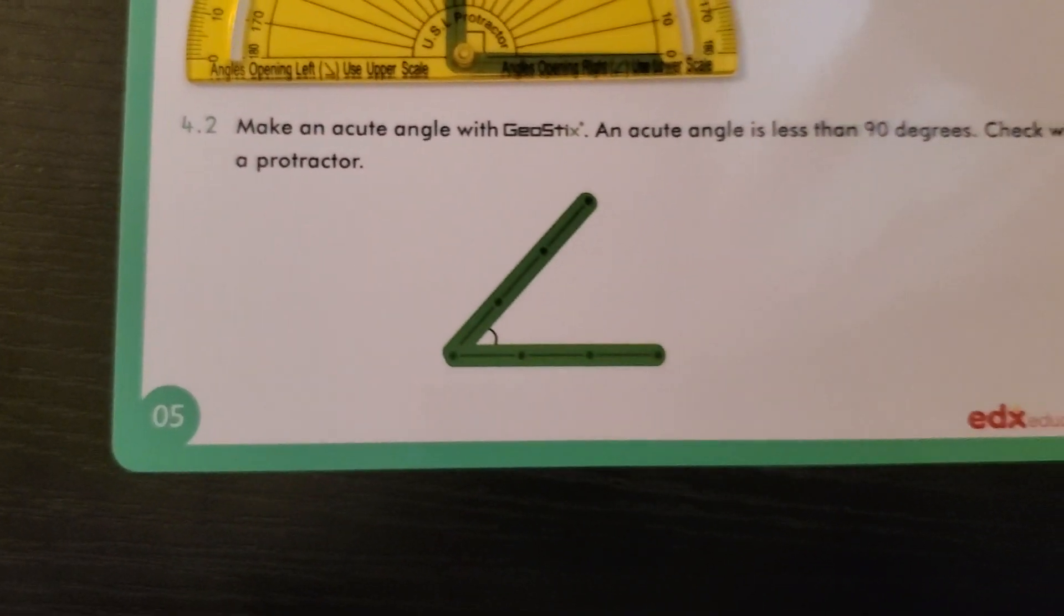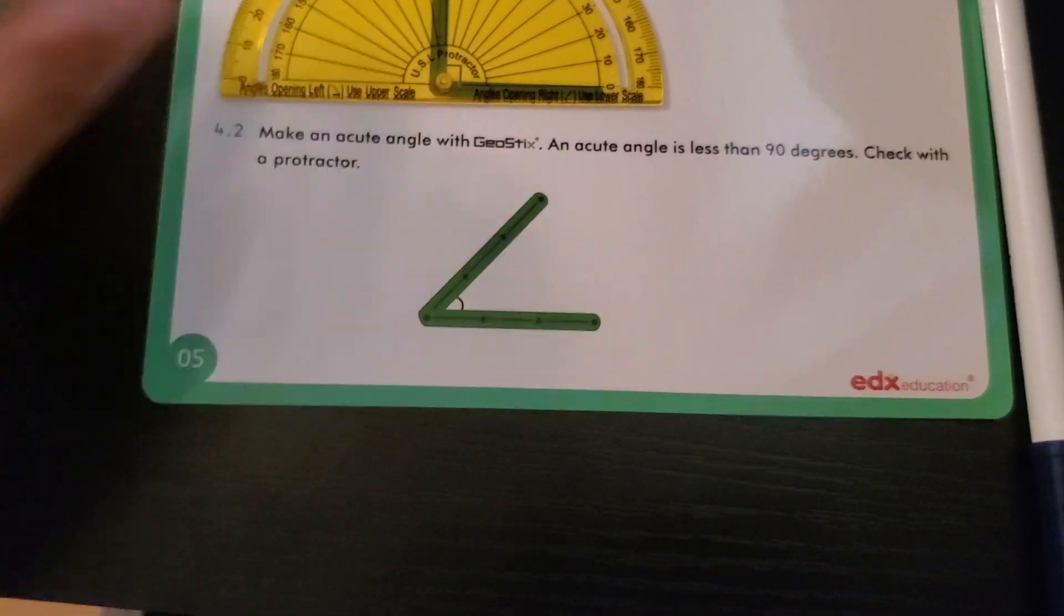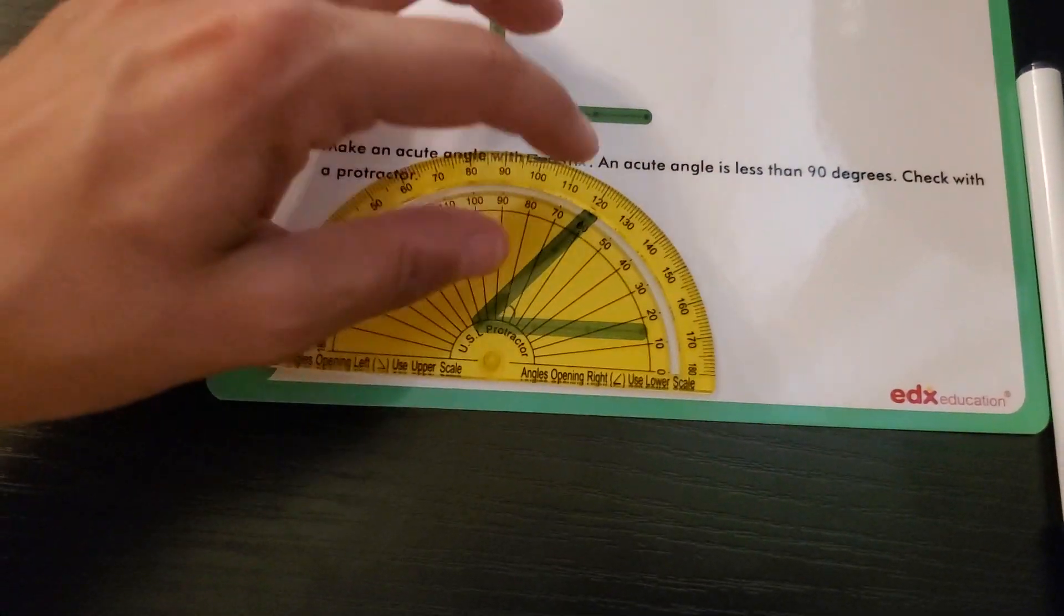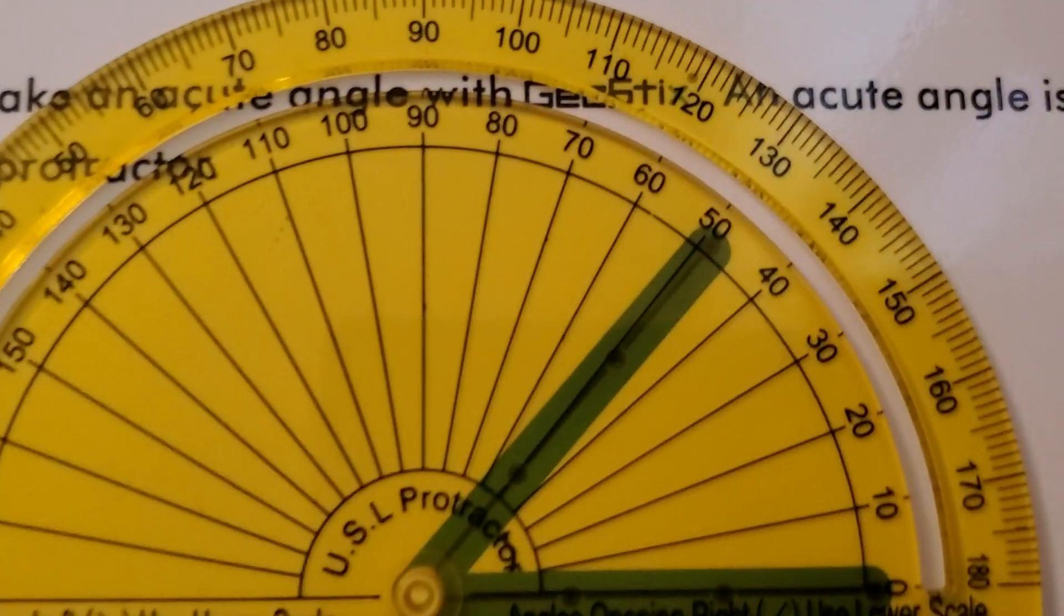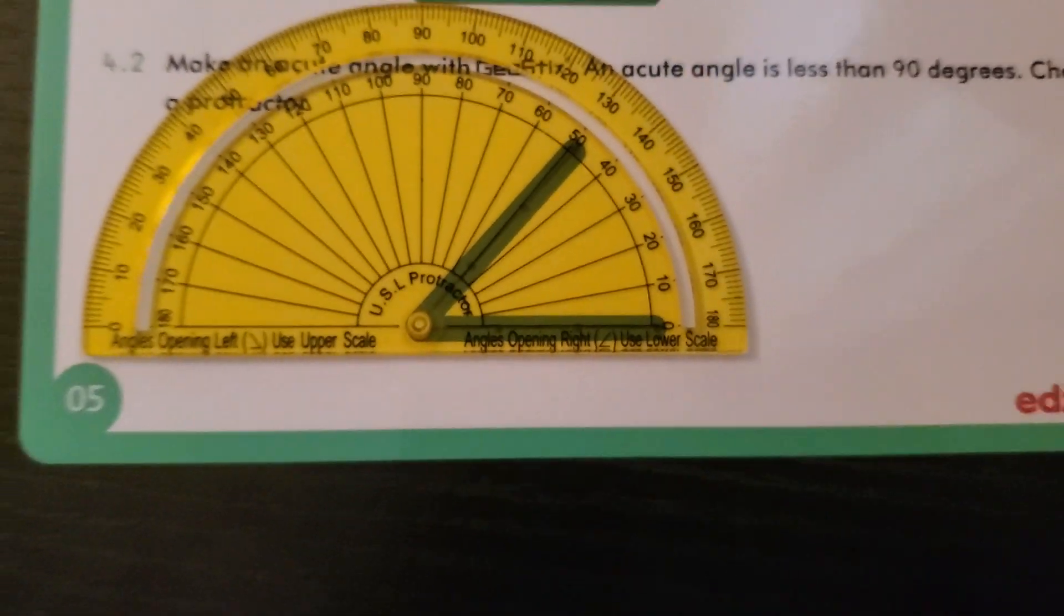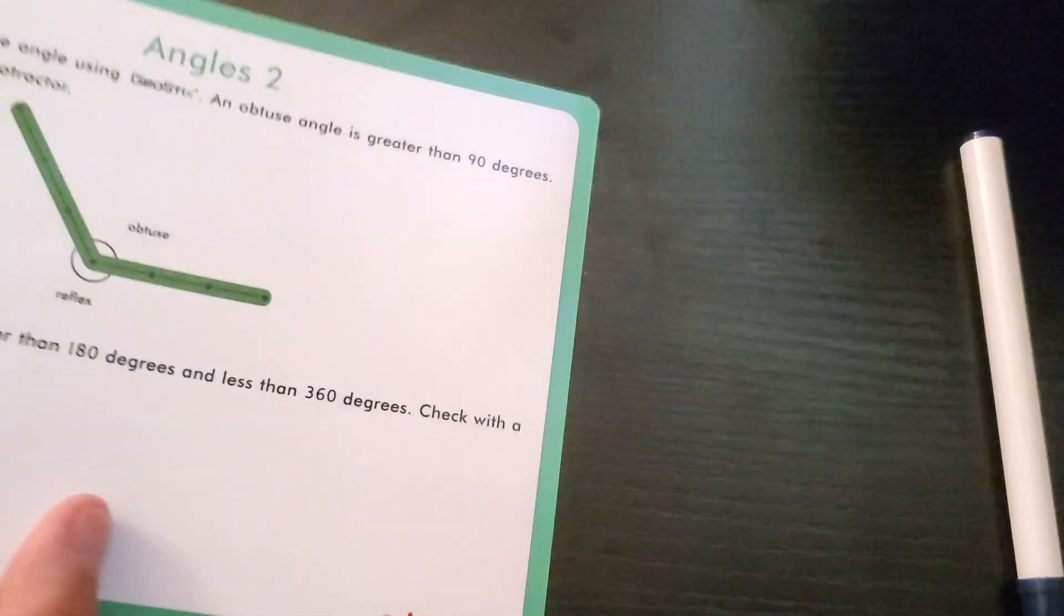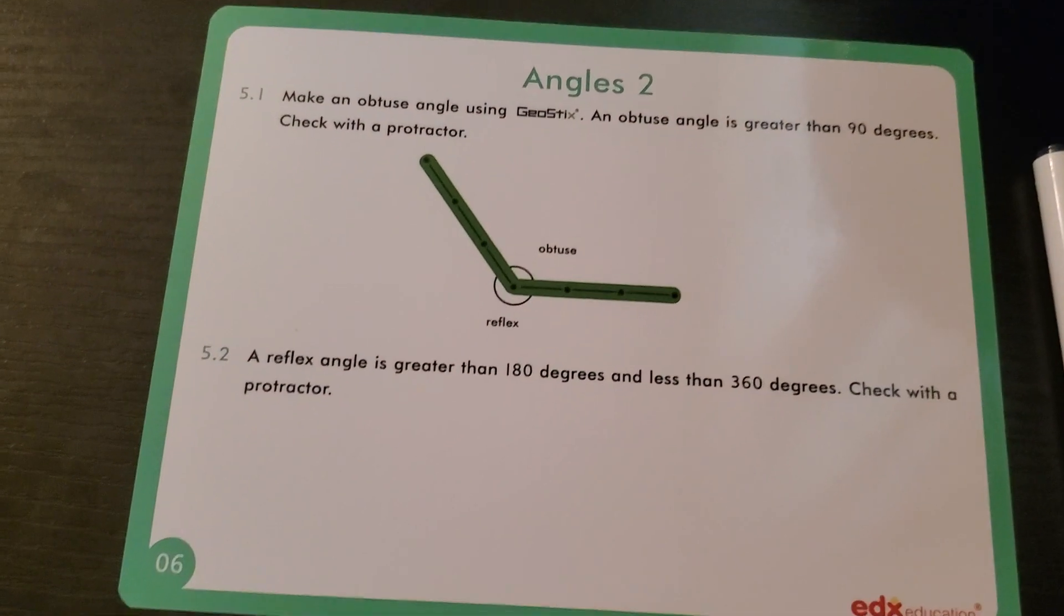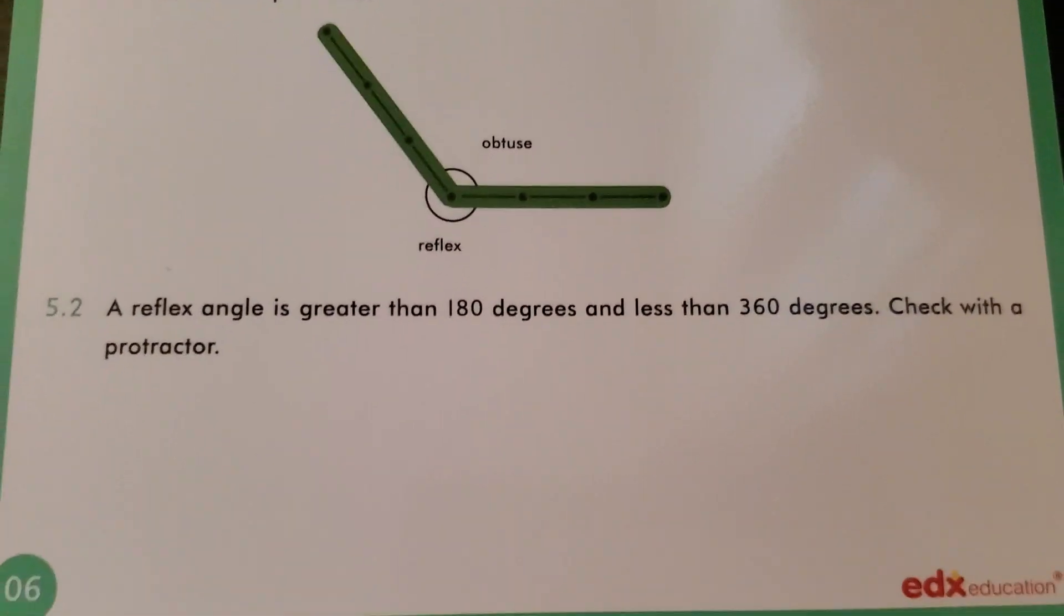You can see 90 degrees. Just a quick review: acute angles are anything less than 90 degrees. As you can see, that one's about 50. Let's flip this over real quick. An obtuse angle is anything greater than 90 degrees.